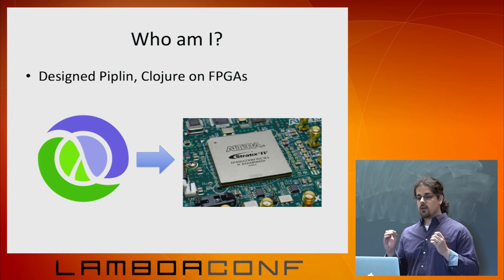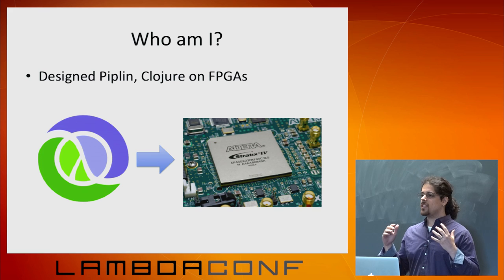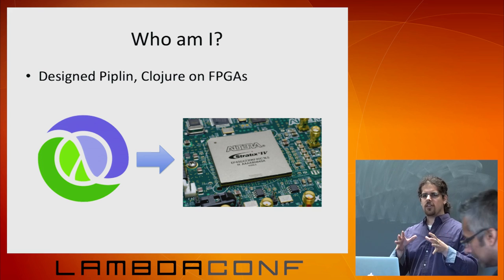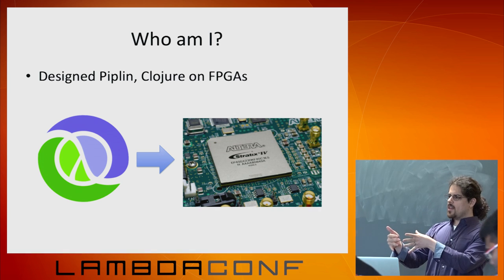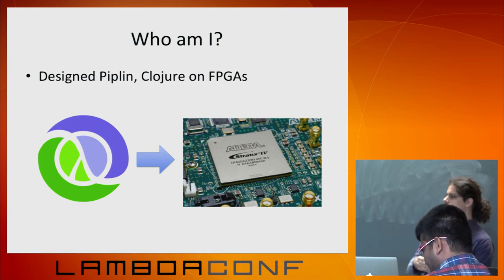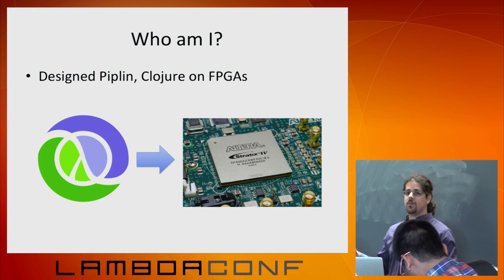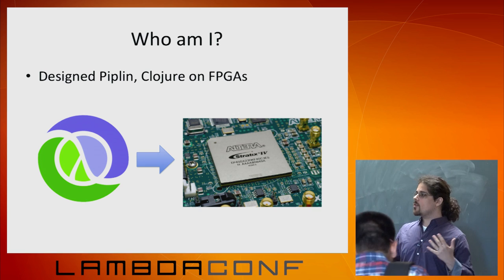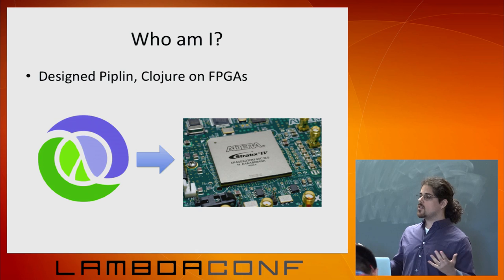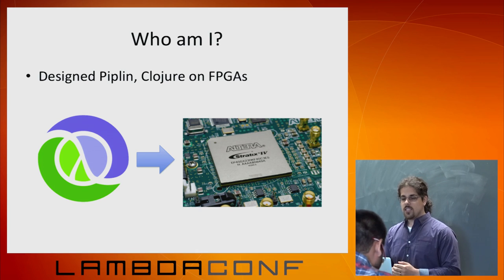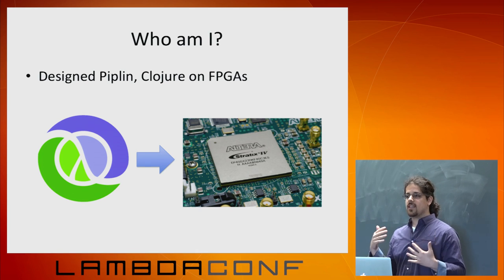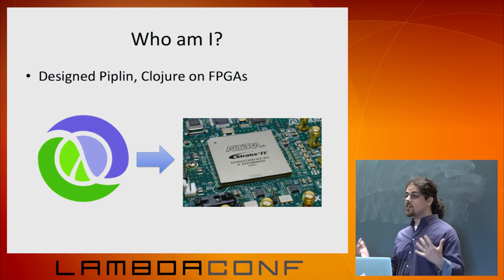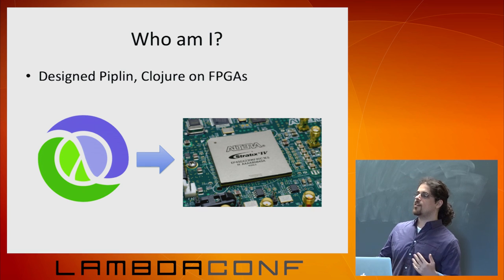FPGAs are a type of chip — I like to think of them as silicon stem cells. What they allow you to do is: if you want it to be a CPU, you can make it a CPU. If you want it to be a GPU, you can just program it and it's a GPU. Or if you want it to do something weird and custom, like a custom network processor, that's also possible. I thought these were really cool, but I didn't like the languages you program them in. I thought it'd be really cool to use a functional language and have types to verify it.